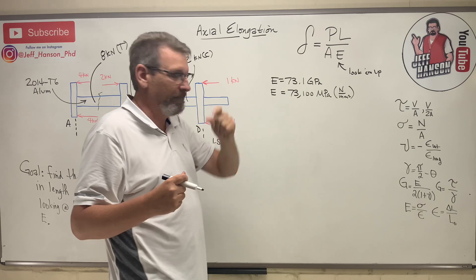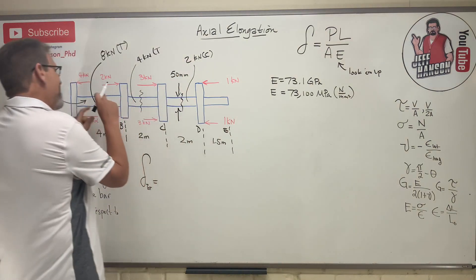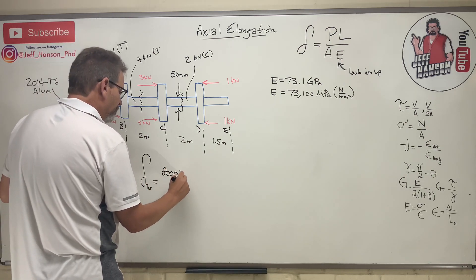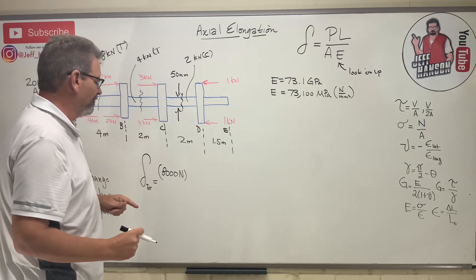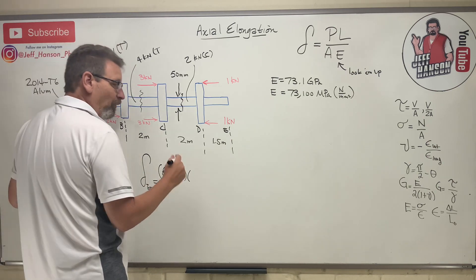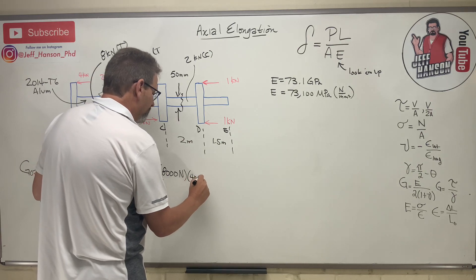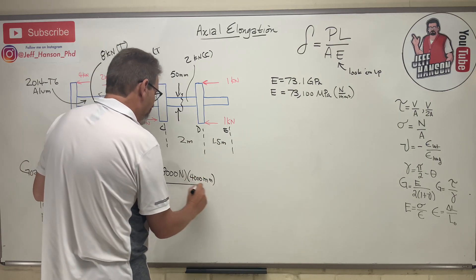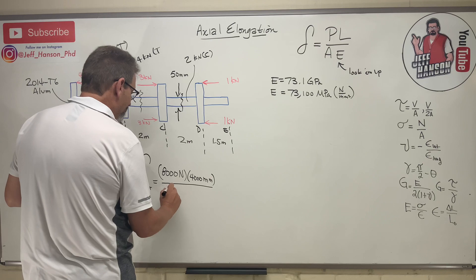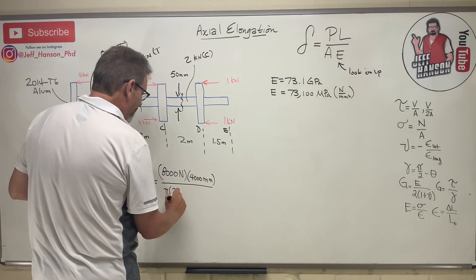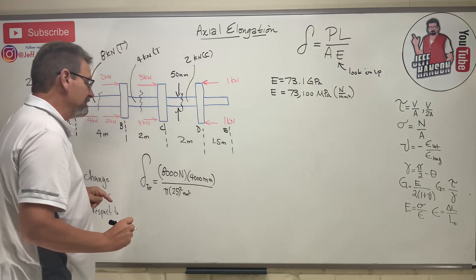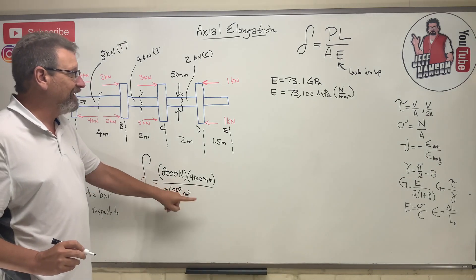Here we go: P for this section is 8 kilonewtons. I'm going to make it 8,000 Newtons - it was kilo, I made it into 8,000. Times L - L is in four meters, but I want everything in millimeters, so I'm going to make it 4,000 millimeters. Divided by A, the cross-sectional area - that's just pi r squared, pi times the diameter is 50, so I'm going to use 25 here. That's millimeters squared.